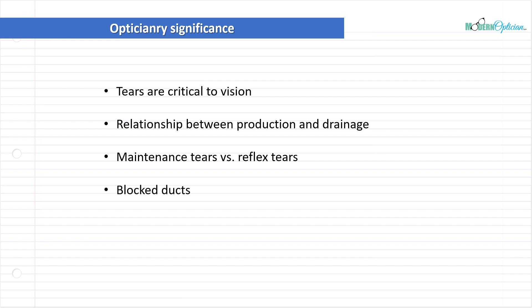Blocked ducts are a very common issue, especially for women who've worn makeup for years. Sometimes the patient has to have their ducts cleaned out by the ophthalmologist - they use a small device through the canaliculi to clean it out. There are a whole bunch of other procedures that can be done revolving around tears. In the next lecture, we're going to talk about the tear layer itself and exactly how it works, which is extremely important, and these two lectures will tie in very closely together. So let's learn a little bit more about tears in the next one.